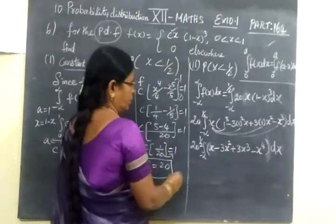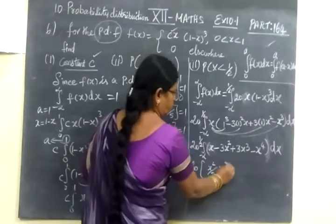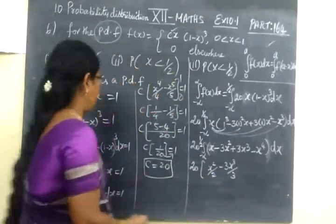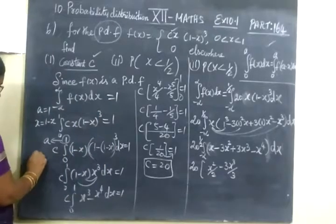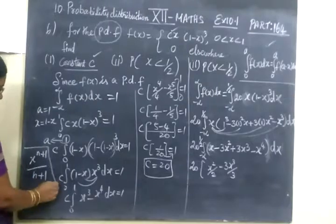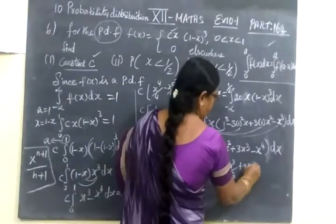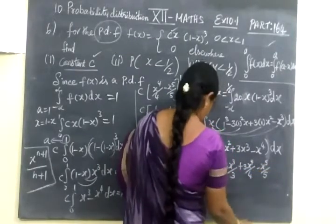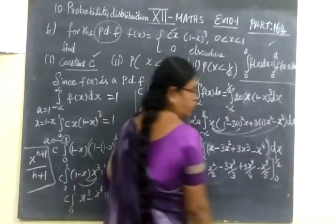Now you take the integration. So 20 bracket x squared by 2 minus 3x cube by 3. For the x power n plus 1 by n plus 1. Here we should write x power n plus 1 by n plus 1 for integration. Then plus 3 x power 4 by 4 minus x power 5 by 5.